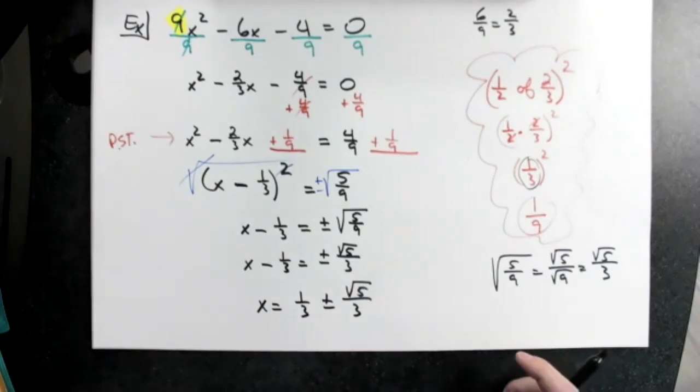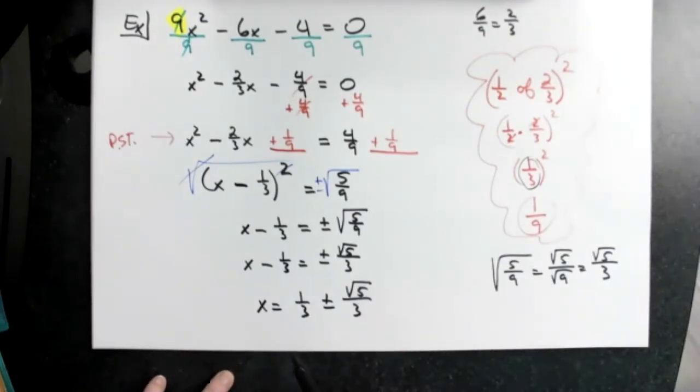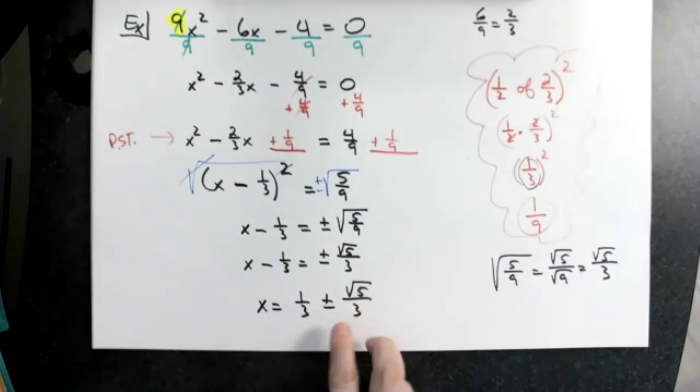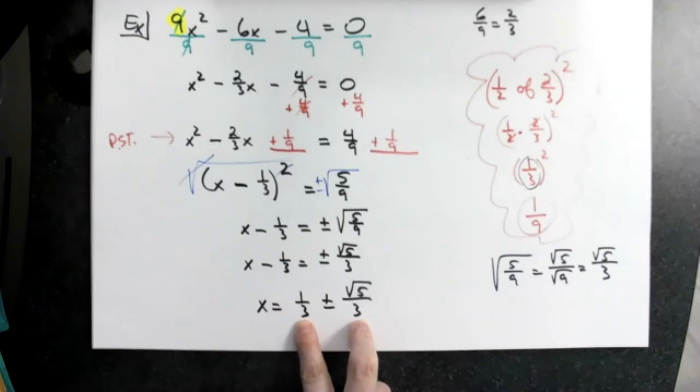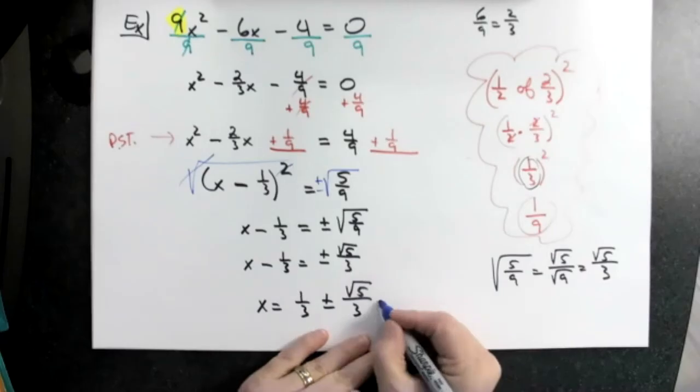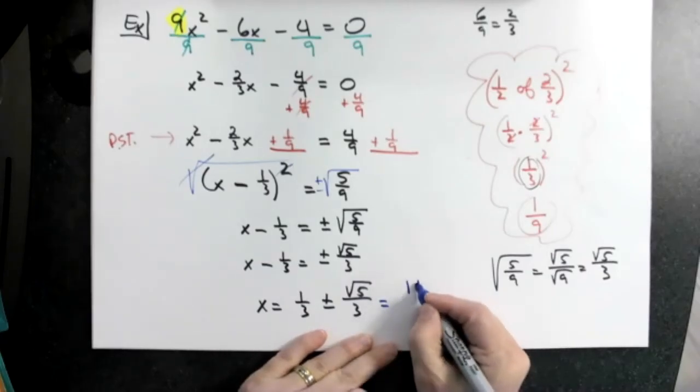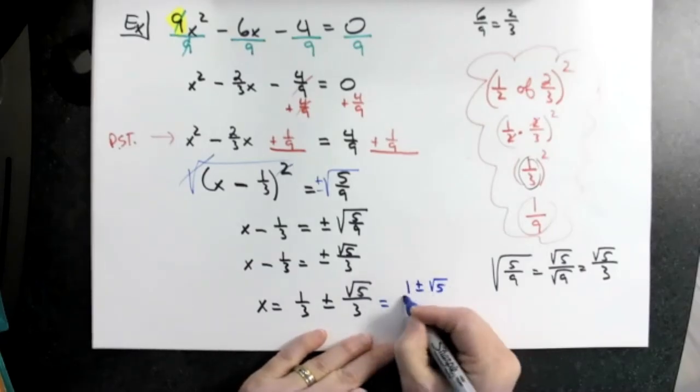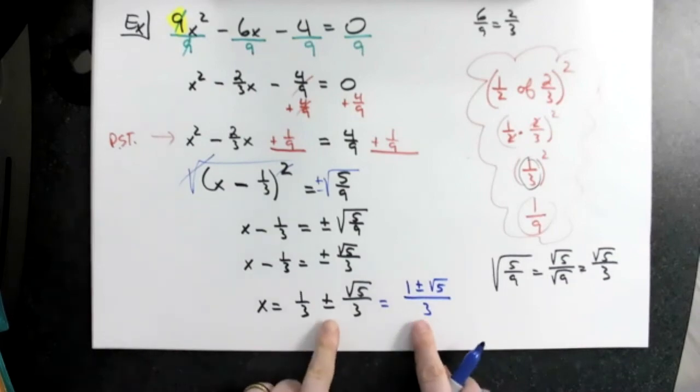If I was writing that by hand, I would probably stop at that point in time. However, you might possibly, especially in MyMathLab, see this: are these not two fractions with common denominators already? So I could add the numerators, right? So really that's the same thing as one plus or minus the square root of five all over three. These two answers are equivalent.